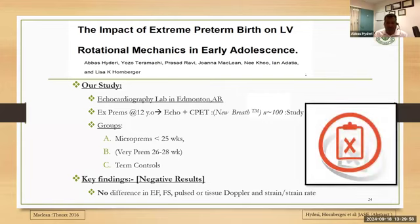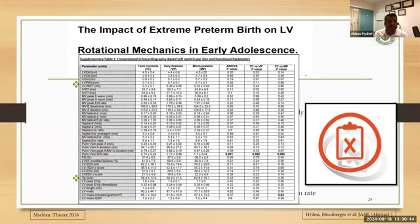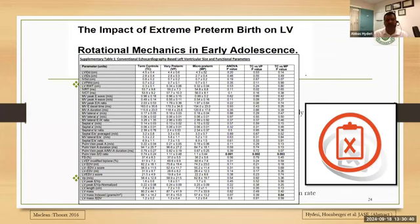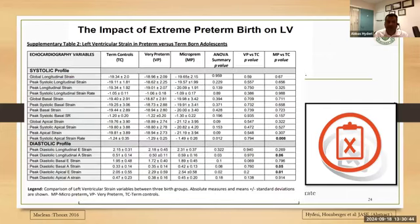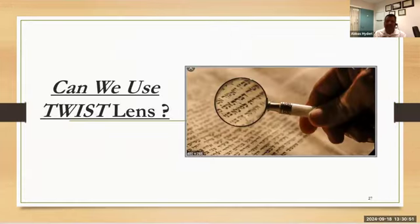We interrogated their echo data and cardiopulmonary exercise data to see if there was any difference. It was disheartening — there was no difference. Each child had about 200 echo variables, and it was really painful to do that many variables only to find no difference. In the systolic and diastolic function by conventional echo, there was no difference, except for a small signal where the S/D ratio was different between term and micro-prem, though it could have been chance.